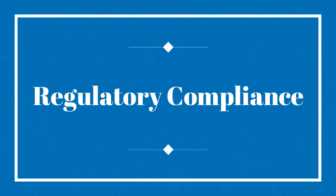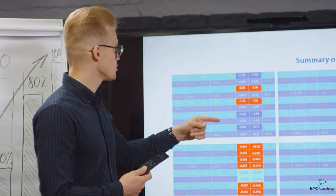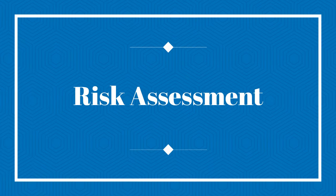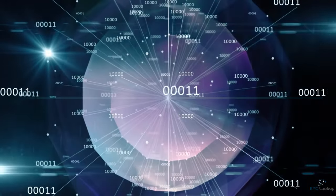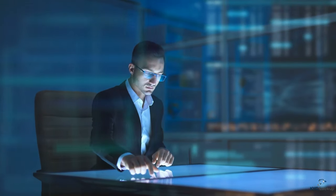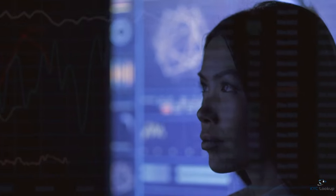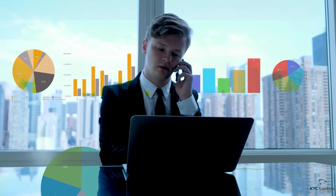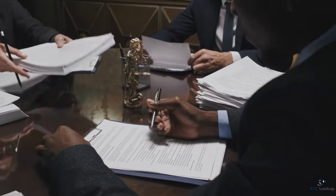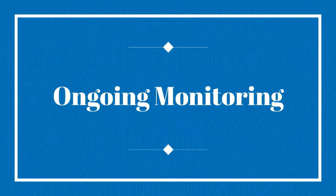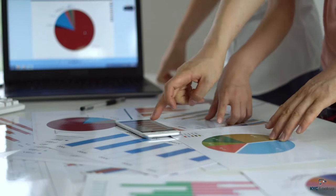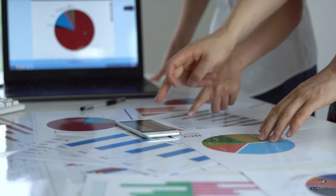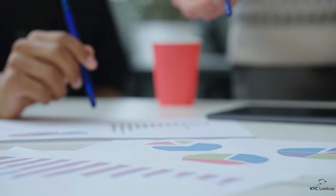Regulatory compliance involves ensuring that the business complies with applicable laws and regulations in its operating jurisdiction. Risk assessment involves evaluating the level of risk associated with a business, including potential exposure to money laundering, fraud, or other illicit activities. Documentation review involves examining official documents such as business licenses, certificates of incorporation, and other relevant legal documents. And ongoing monitoring involves establishing mechanisms for continuous monitoring of the business relationship to detect any changes in risk factors or compliance status.